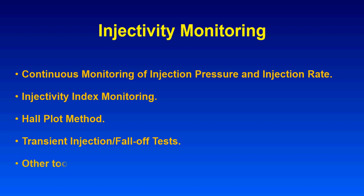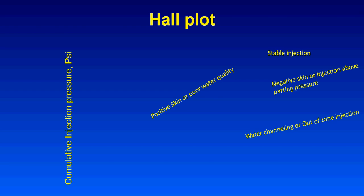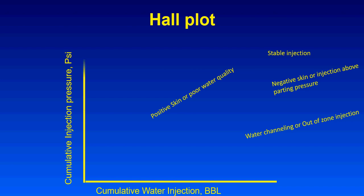Now we are focusing on the third one, which is the Hall plot method. The Hall plot consists of cumulative injection pressure versus cumulative injected water, plotted from the field data curves.